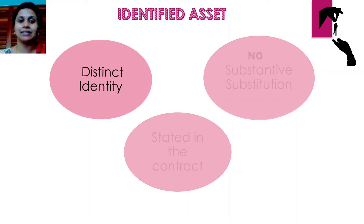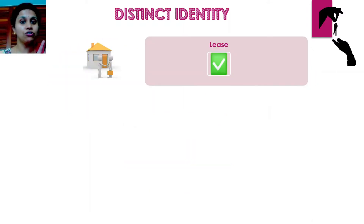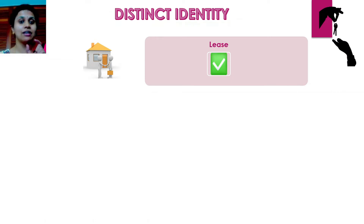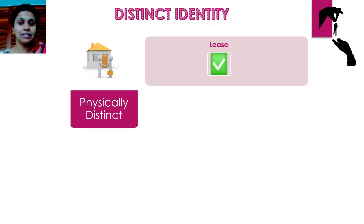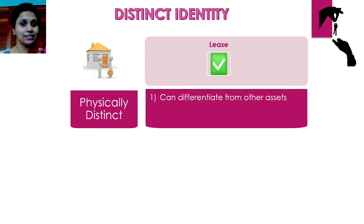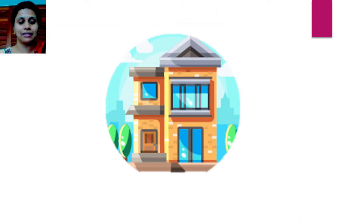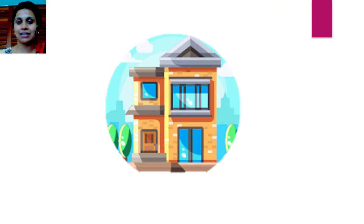Let us look at the first criterion: distinct identity. Let us say you as the lessee have leased a house. The first thing you need to check is whether this house is physically distinct — can you clearly differentiate this house from other assets and can you use this house independently? If you have leased the entire house, it is very clear that this is physically distinct. You can easily separate this asset from others and use it independently.